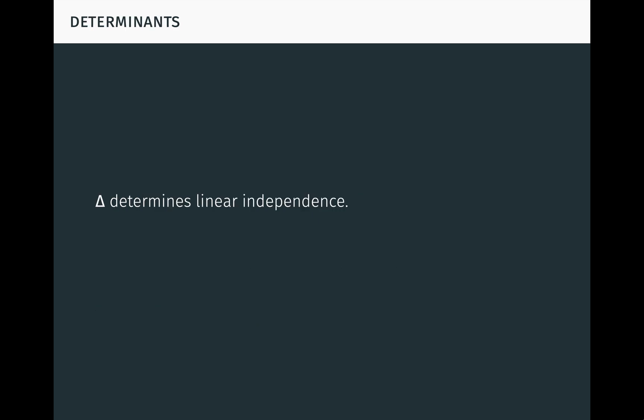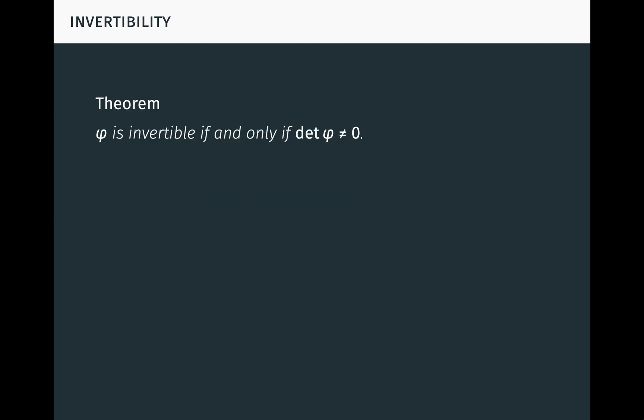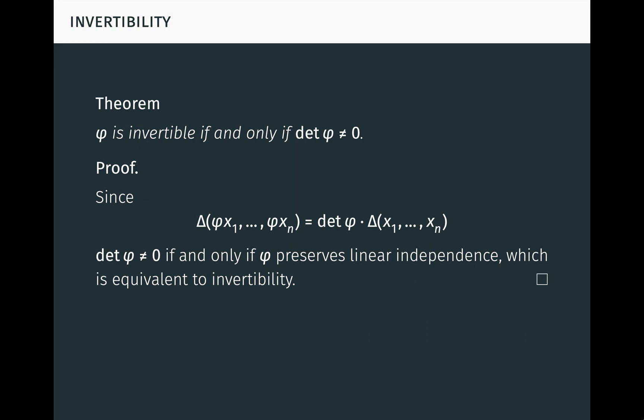Recall from the previous video that delta determines linear independence: delta of (x1,...,xn) is non-zero if and only if the vectors x1 to xn are linearly independent. This leads to an important theorem: a linear transformation phi is invertible if and only if its determinant det(phi) is non-zero. Since delta of (phi(x1),...,phi(xn)) equals det(phi) times delta of (x1,...,xn), det(phi) is non-zero if and only if phi preserves linear independence, which is equivalent to invertibility.